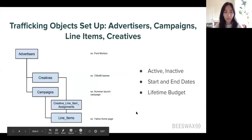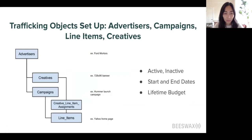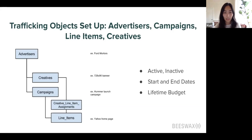Diving into trafficking objects setup. On the left-hand side you'll see our hierarchy of advertisers, campaigns, and line items. You'll also see creatives and the creative-line associations. The first check I'd recommend is just going through each of these objects and making sure they're active. This seems obvious, but it comes up a lot as your teams scale on our platform and build out many campaigns, lines, and creatives — it can be hard to remember to toggle active or inactive at each object.